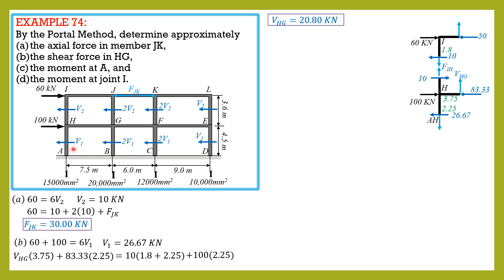Moment at A: since V1 is solved, if we isolate this part then V1 is rightward, so the moment at A is counterclockwise. And because this is the midpoint of AH, midpoint is half of 4.5, so moment at A is V1 which is 26.67 times 2.25, and the sense is counterclockwise. So moment at A is equal to 60 kNm.